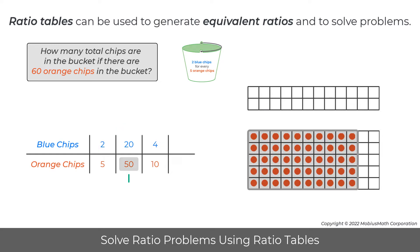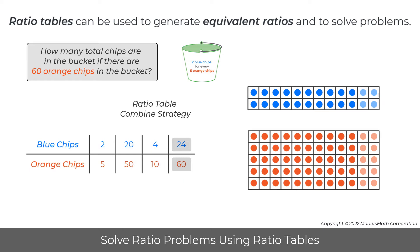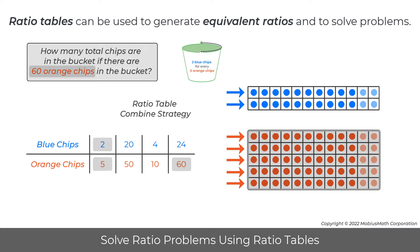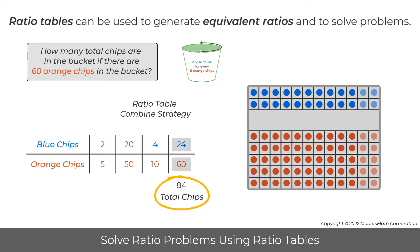Finally, 50 orange chips can be combined with 10 orange chips to get 60 orange chips. So, 20 blue chips can be combined with four blue chips to get 24 blue chips. Notice that this is a ratio with two blue chips to five orange chips that has 60 orange chips. So, 24 blue chips can be added to 60 orange chips to get a total of 84 chips in the bucket.